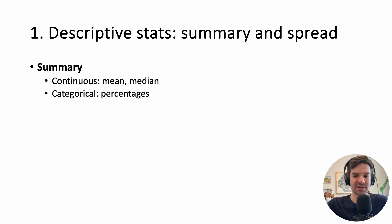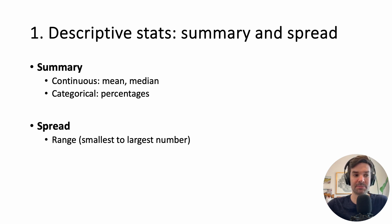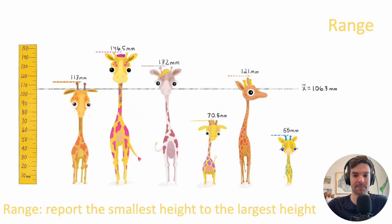In addition to the summary, we might want to know how much variability or spread there was. The simplest example of spread is to report the range — smallest to largest number. Here the smallest giraffe is 55 millimeters and the tallest is 147 millimeters, so the range is 55 to 147.